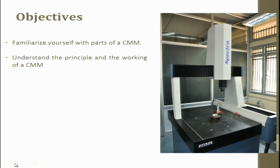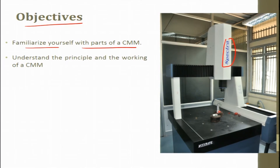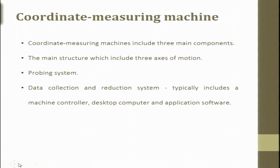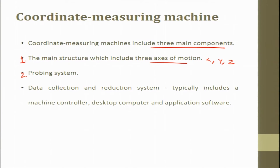The objectives of this lecture are to familiarize yourself with the parts of this specific CMM — the Spectra CMM in our laboratory — and to understand the principle and working of a CMM. A coordinate measuring machine includes three major components: number one is the main structure, which includes three axes of motion — X, Y, and Z; number two is the probing system, which here is mechanical; number three is the data collection and reduction system, which includes data cleaning.